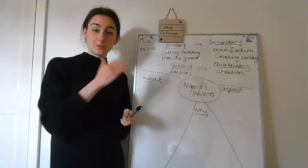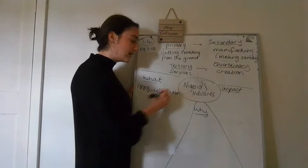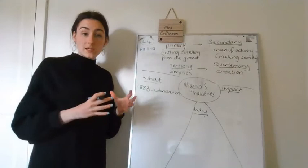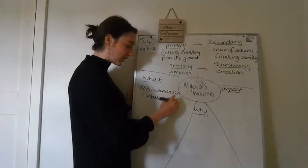So first thing is, what's changed? What's changed over time? So you might remember from a few lessons back, something that happened in 1883. That was colonisation. So colonisation happens. And at this point, the economy, or their industries was very unbalanced. And the majority of people worked in the primary industry, mostly farming. So very unbalanced, and mostly primary.